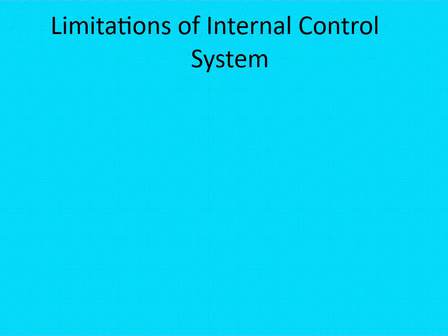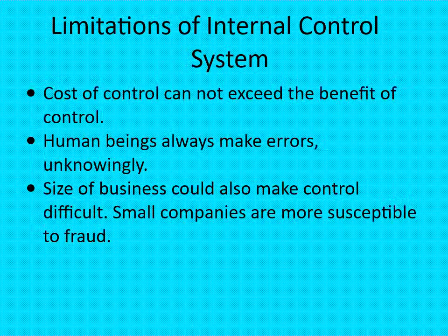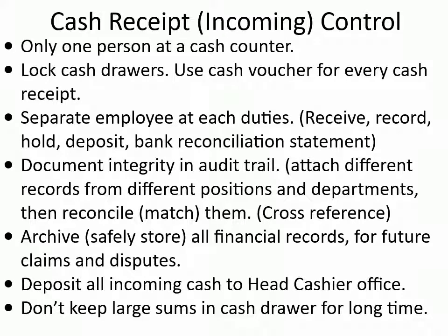Limitations of the internal control system: The cost of control cannot exceed the benefit of control. Human beings always make errors, unknowingly. The size of business could also make control difficult — small companies are more susceptible to fraud. Cash receipt (incoming) control: only one person at a cash counter; lock cash drawers; use a cash voucher for every cash receipt; have a separate employee at each duty — receive, record, hold, deposit. Maintain a bank reconciliation statement and document integrity in the audit trail. Attach records from different positions and departments, then reconcile and cross-reference. Archive and safely store all financial records for future claims and disputes.